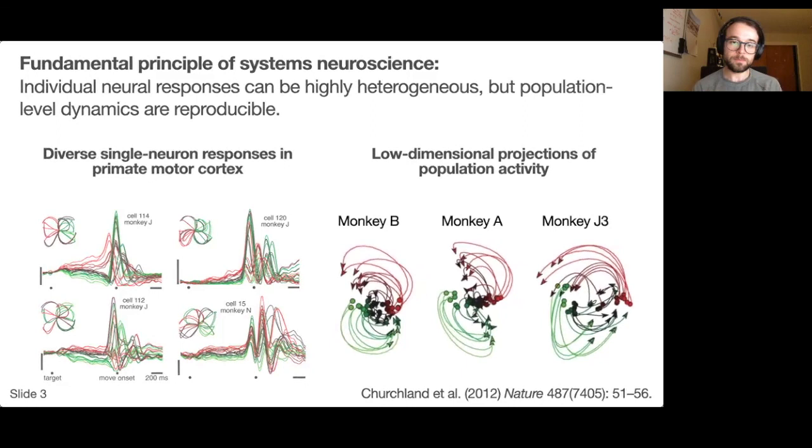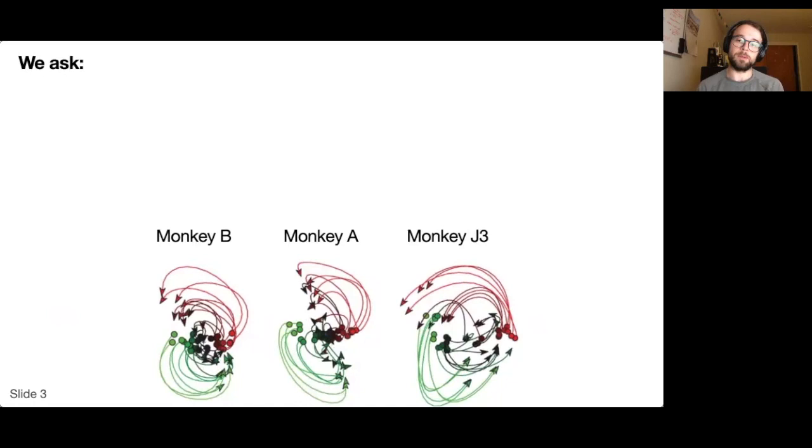Our poster investigates three basic questions. First, how should we quantify animal-to-animal differences in systems neuroscience? For example, are these three animals here really the same or are there subtle differences that we can pick up?